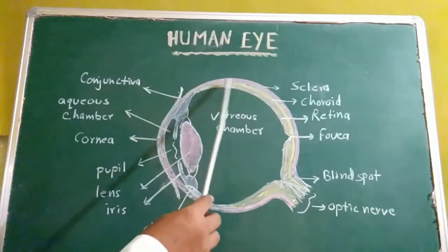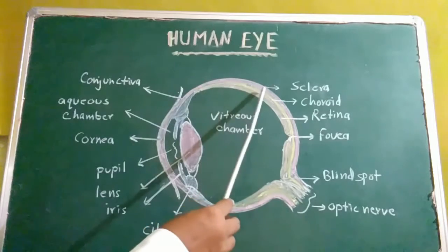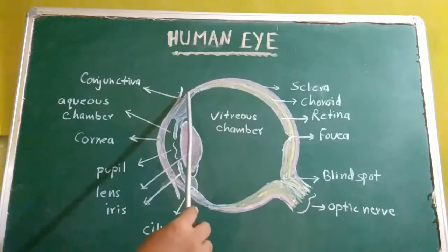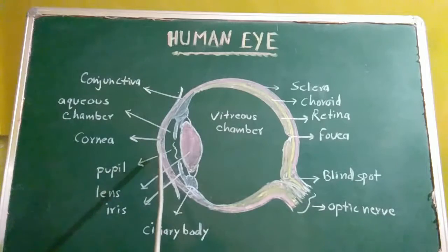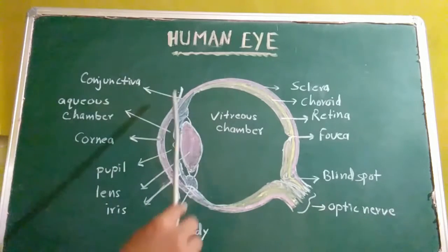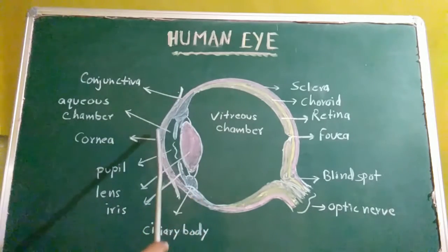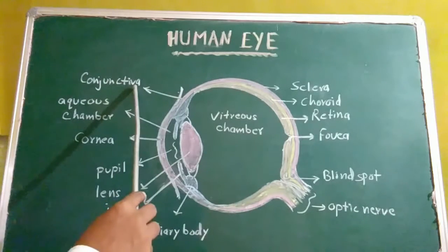It has two parts. Posterior part is known as sclera and front part is known as cornea. This cornea is covered by a thin membrane called conjunctiva.